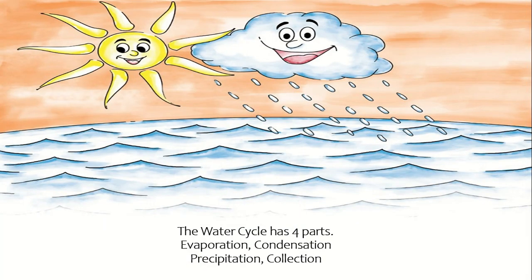The water cycle has four parts: Evaporation, Condensation, Precipitation, and Collection.